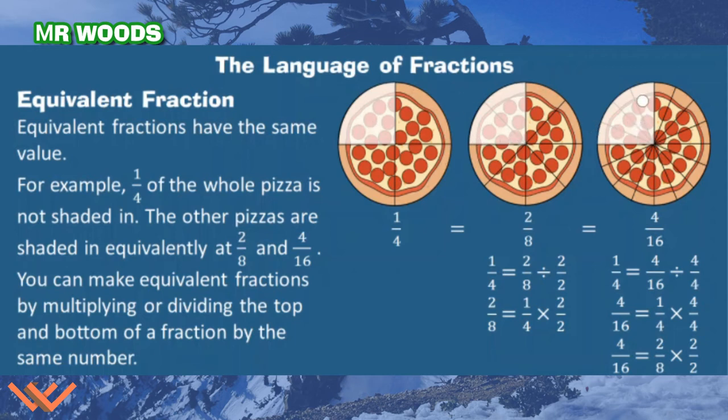And then, likewise here, I have this pizza divided into sixteenths. I have 1, 2, 3, 4 sixteenths. Again, shaded by that one-fourth. They're equivalent. I show equivalency down here. One-fourth is equal to two-eighths, which is equal to four-sixteenths.